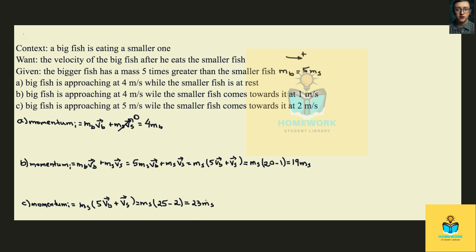Since we have MS on parts B and C, let's also express part A in terms of MS. We substitute MB for five MS, so the initial momentum for part A is four times five MS, which gives us 20 MS.